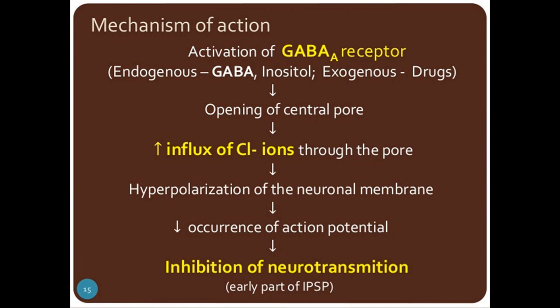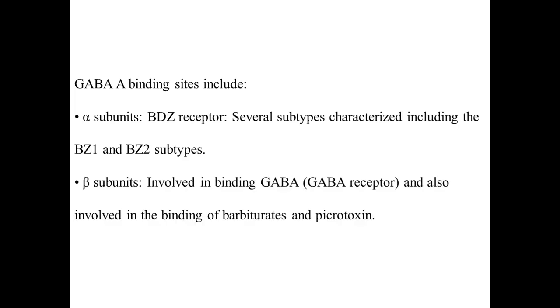In the mechanism, activation of the GABA-A receptor — by endogenous GABA or exogenous GABA agonist drugs — is responsible for opening the central pore, increasing the influx of chloride ions, causing hyperpolarization of the neuronal membrane and decreasing the occurrence of action potentials, thereby inhibiting neurotransmission. The alpha subunit contains the benzodiazepine receptor, with subtypes including BZ1 and BZ2. The beta subunit is mainly involved in binding of GABA and also drugs like barbiturates and picrotoxin.